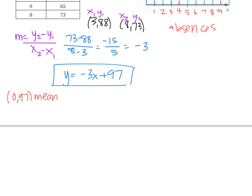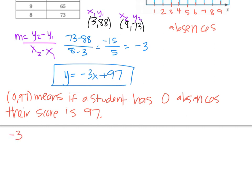So what does this mean in terms of the story about being absent and your final exam score? Well, it means if a student has zero absences, their score is 97. Now, obviously, we know that this isn't perfect, right? But that's our estimated value. And then the negative 3, slope, means that each time... remember, words, slope sentences are each, every, and per.